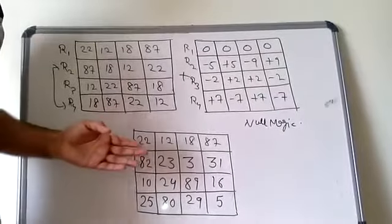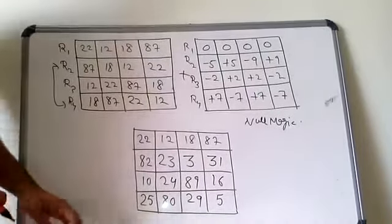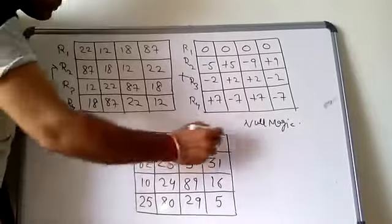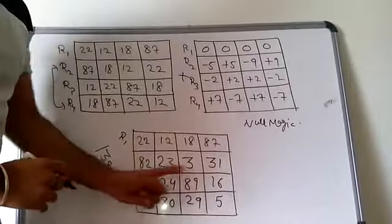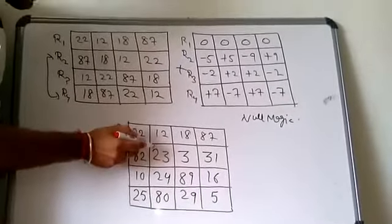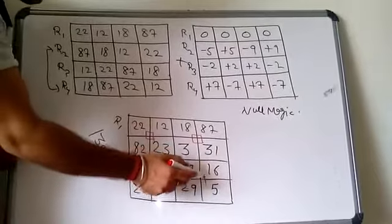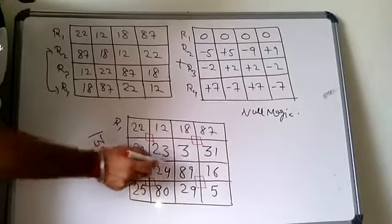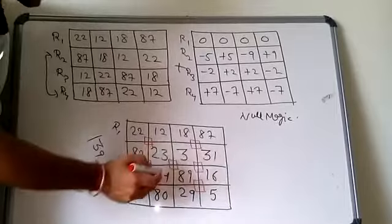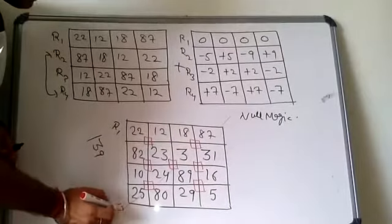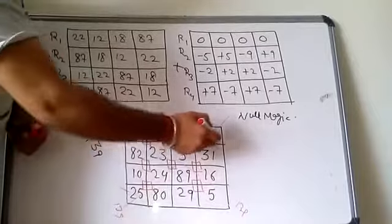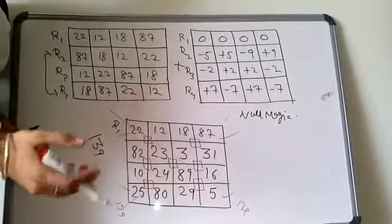So again guys, this is a new combination of Ramanujan's magic square which is again unique. And you can add any square, the overall total you will get is 139. Whether you add rows, columns, these squares, diagonals, or corners, you will get 139. It's so simple guys. So this is a new and fresh combination.